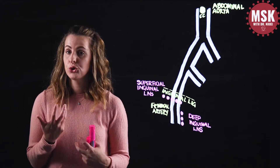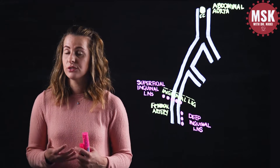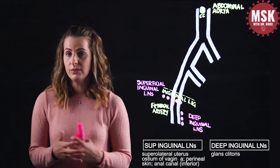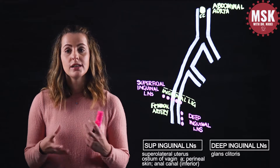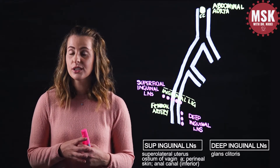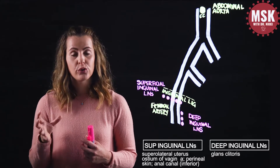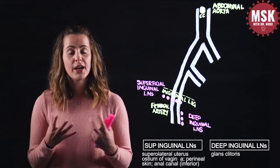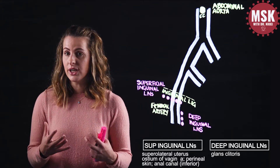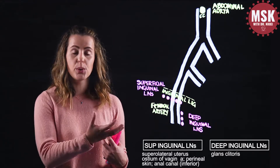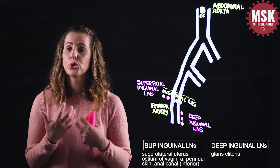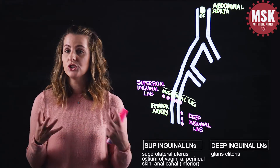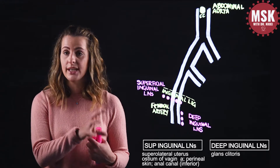The afferent drainage to the deep inguinal lymph nodes is going to be the collecting vessels from the clitoris. The superficial inguinal lymph nodes receive lymph from a variety of structures: most importantly lymph from the fundus of the uterus, including the isthmus and the attachment to the uterine tubes. The superficial skin of the perineum drains to these nodes, as does the vagina just inferior to the hymen. Additionally, the anal canal inferior to the pectinate line and the adjacent perianal skin will also drain to the superficial inguinal node group.